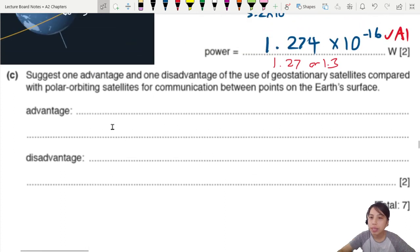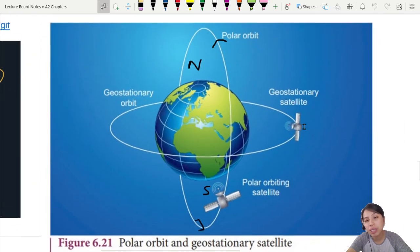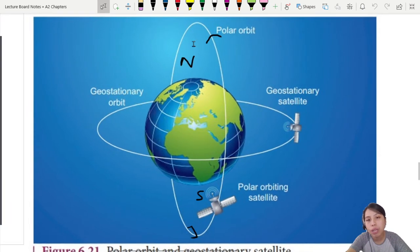Suggest an advantage and disadvantage of using geostationary. Pros and cons of geostationary. Compared to who? Compared with polar orbiting satellite. What's polar again? As we mentioned in the previous video, polar. Well the difference between polar and geostationary is polar is you go around the poles, north pole to south pole, up and down. Whereas geostationary is at the equator, round and round. So what's the benefit?